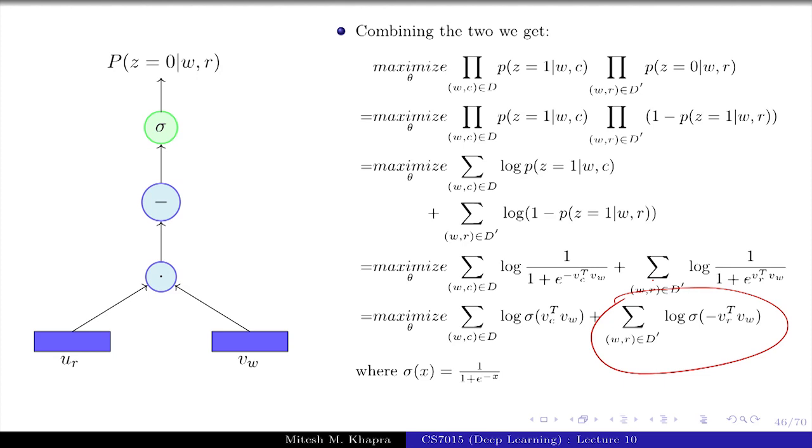We had this objective function where we want to maximize the probability that the pair is correct for the correct pairs, and maximize the probability that the pair is incorrect for the incorrect pairs. Both these probabilities we modeled using a sigmoid function, and inside the sigmoid function we had the dot product between the corresponding representations. The net effect is you either maximize the dot product of the correct pairs or minimize the dot product of the incorrect pairs.